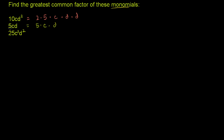And then finally you have 25c to the third d squared. Well, 25 is 5 times 5, and then we have times c, times c, times c — that's what c to the third is. And then we have times d squared: times d, times d.